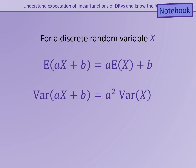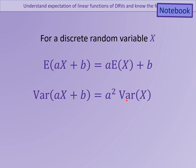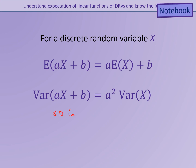To summarise the rules: if we want to find the expected value of AX plus B, we multiply the expected value of X by A and add B. If we want the variance of AX plus B, we take the variance of X and multiply it by A squared. As an additional rule, because the standard deviation is the square root of the variance, the standard deviation of AX plus B is the standard deviation of X multiplied by A — not A squared.